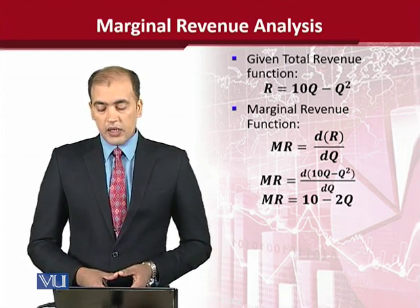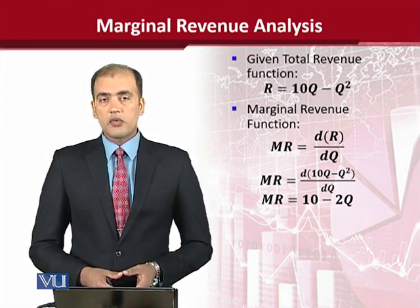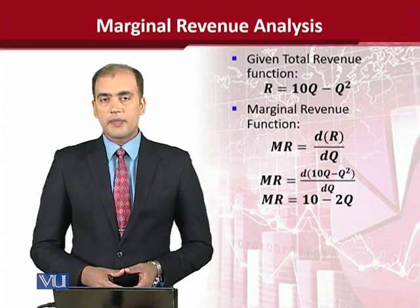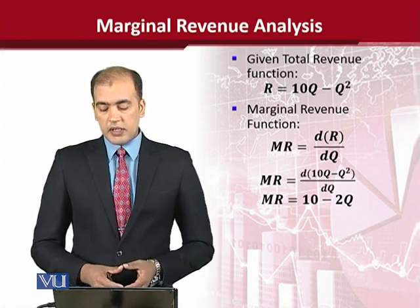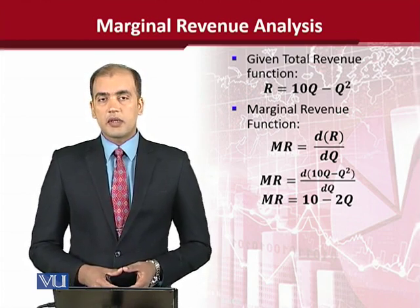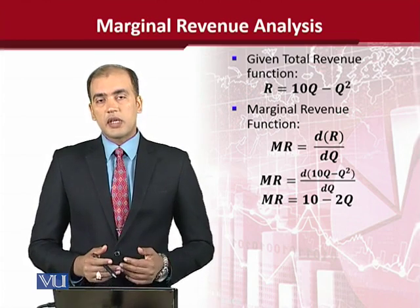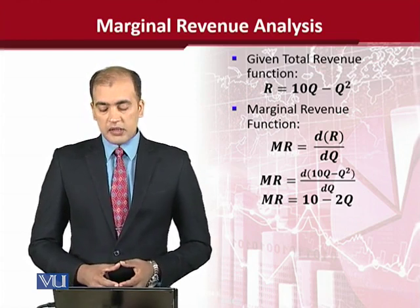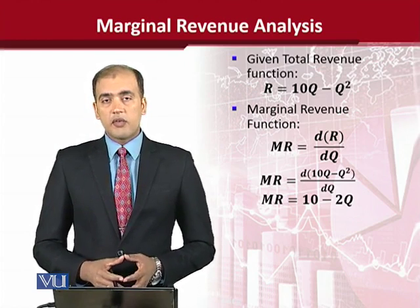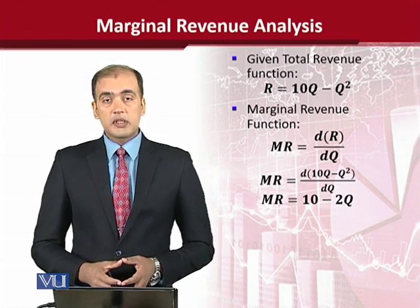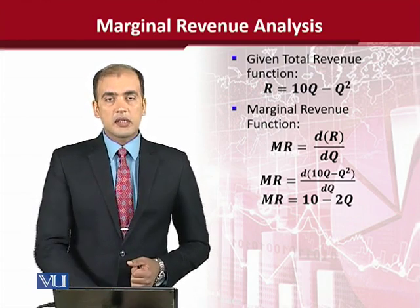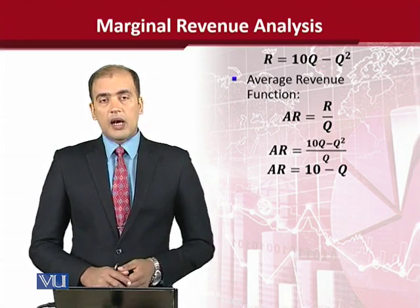Now, how we can find the marginal revenue function — simply by taking the derivative of the revenue function with respect to q, because q is the independent variable. By using the rules of derivatives, we have found the marginal revenue which is 10 minus 2q.